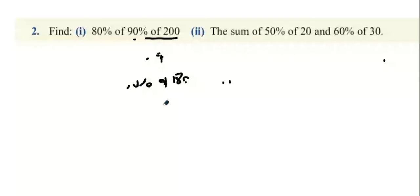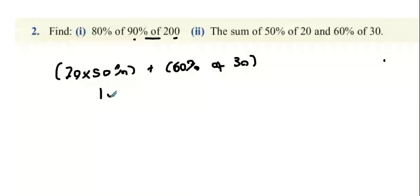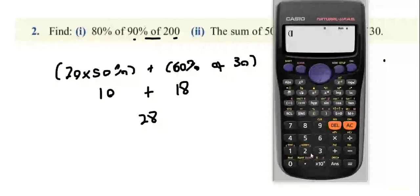Now we're on to part two. You gotta find the sum of 50% of 20 plus 60% of 30. So 20 multiplied by 50% plus 60% multiplied by 30. Put that into your calculator, you're going to get 10 plus 18, which is 28.